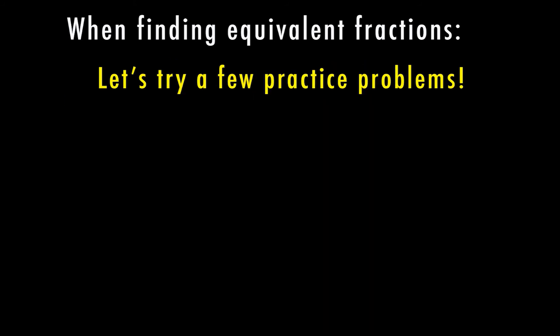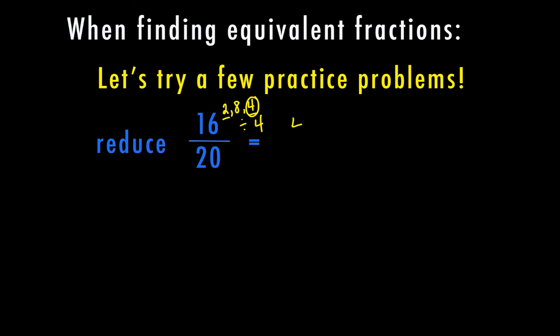Now that we've gone over the rules for finding equivalent fractions, let's practice. Here we're going to reduce 16 over 20. First, does the numerator go into the denominator equally? No, 16 does not go into 20. So we find the factors of 16: 1 and 16, 2 and 8, and 4 and 4. Of those, 2 and 4 both go into 20. Since we're reducing to simplest form, we divide by the biggest factor — 4. 16 divided by 4 is 4, and 20 divided by 4 is 5. So 16 over 20 reduces to 4 fifths.